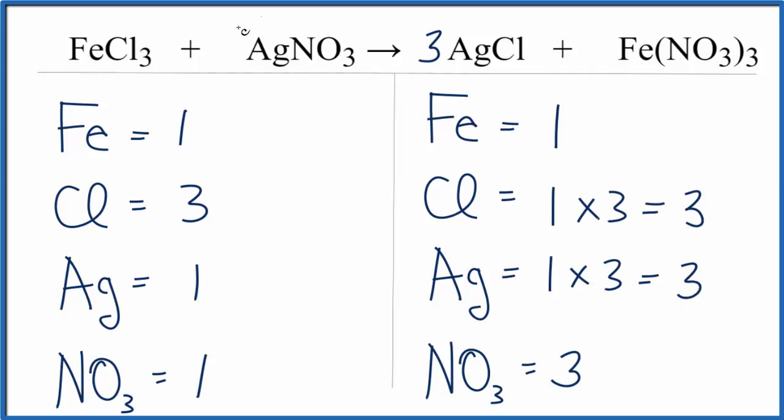If we put a coefficient of 3 in front of the silver nitrate, AgNO3, that would fix the silvers. 1 times 3, that gives us 3 silver atoms. And we have 1 nitrate here times 3, that gives us 3 nitrates. And we're done. This equation is balanced.